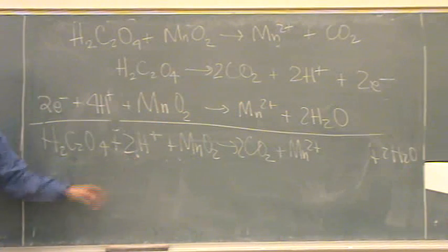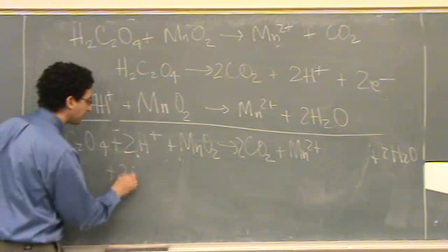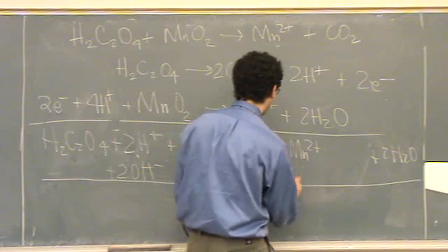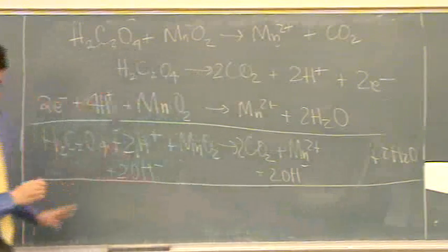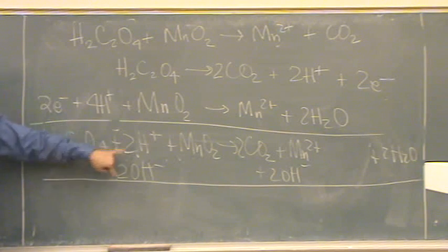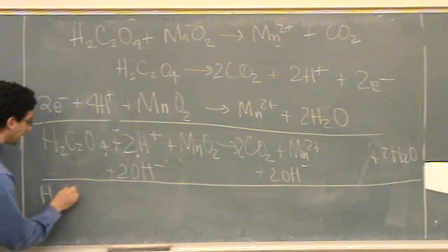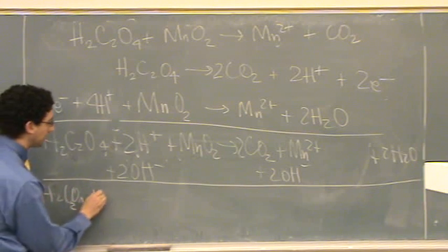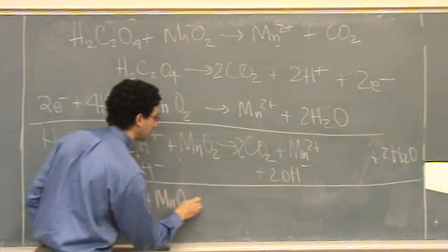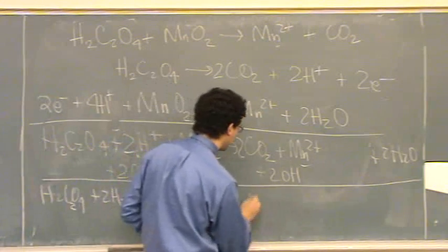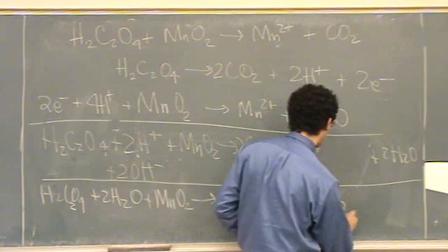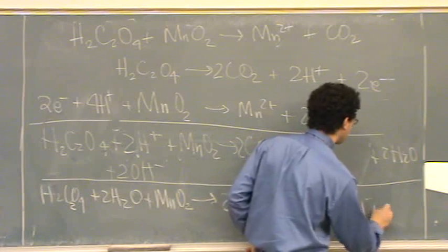we'd look at our H+. There's two of them, so we'd add the equal number of OH- to both sides. Two OH- to equal the two H+. These will end up being two waters. So we have two waters there. Now, oxalic acid plus two waters plus MnO2, the manganese four oxide, goes to 2CO2 plus manganese two ion plus 2OH- plus two waters.